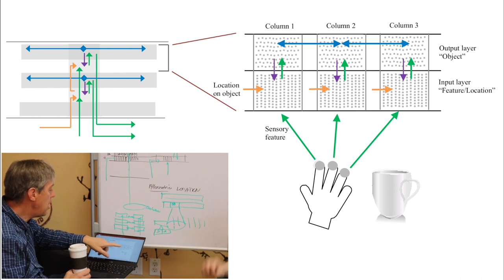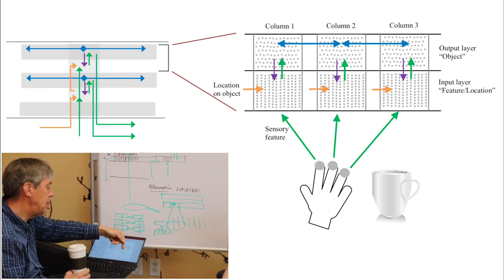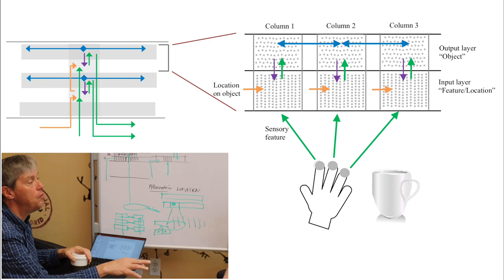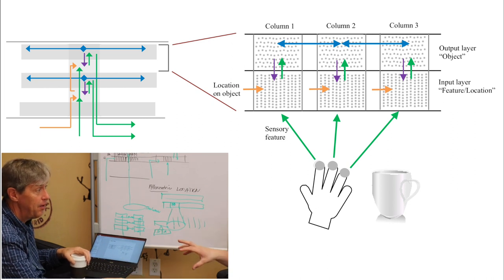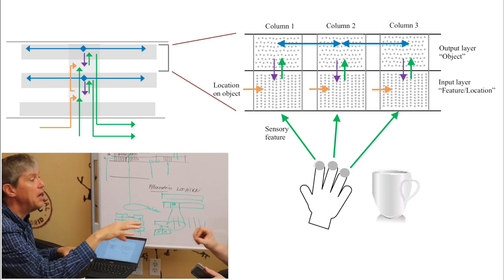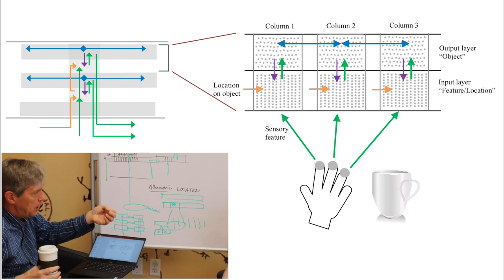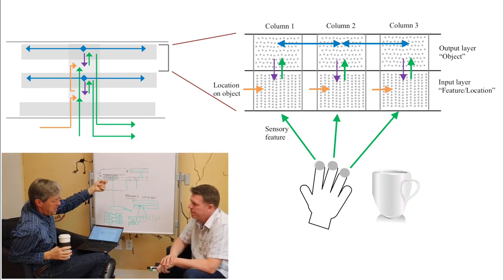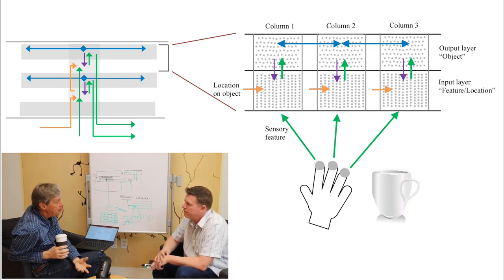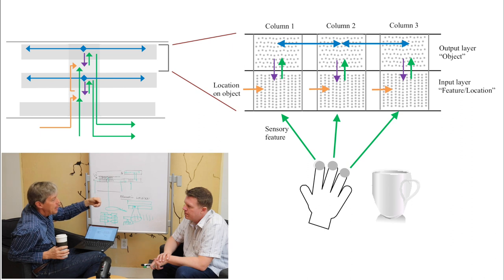So what happens is, if you look at this diagram again, the coffee cup is projecting back down to the input layer. And it's saying, look, it's a coffee cup. These are all the feature location pairs that you might find on a coffee cup. Well, the column knows that. The output layer says it's a coffee cup. And the column knows what features might be on it. It's basically a pooling layer. So the output layer that says associated with me are 20 different input features. Feature location pairs. That's a definition of the object. And any one of those might be occurring right now.